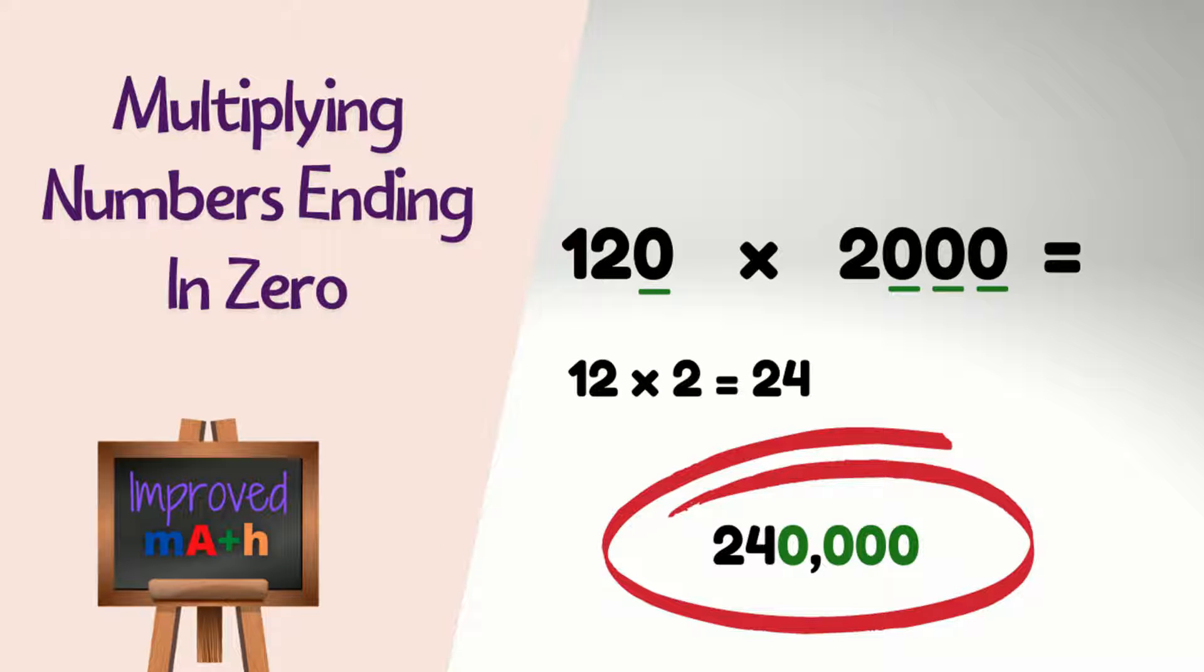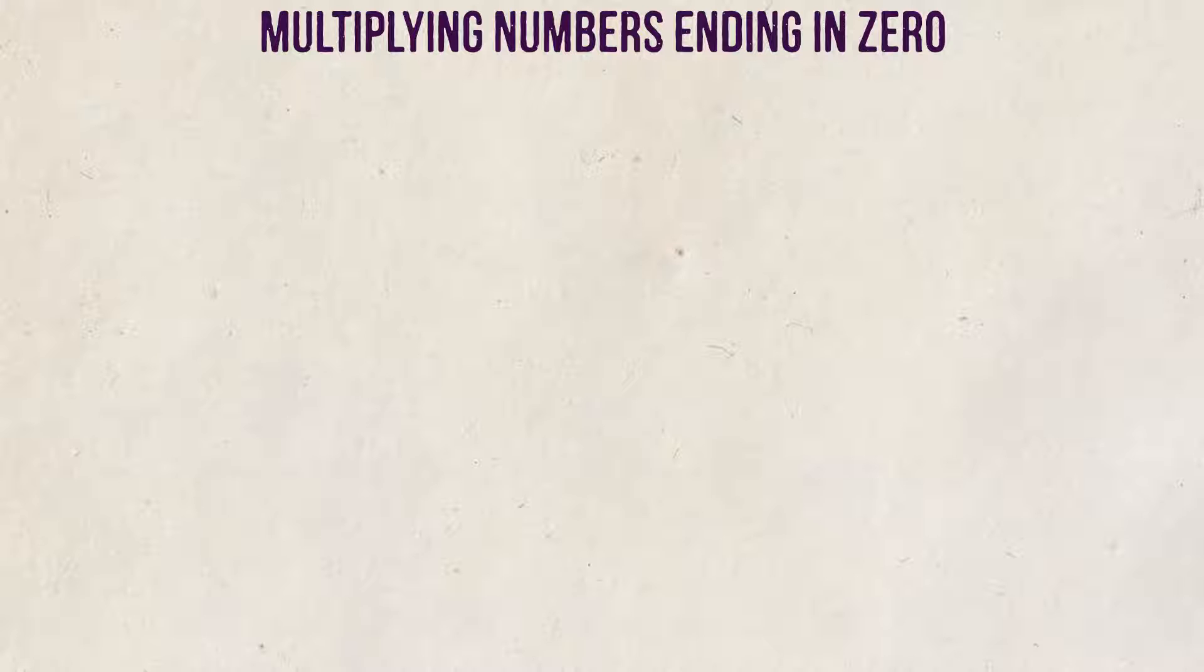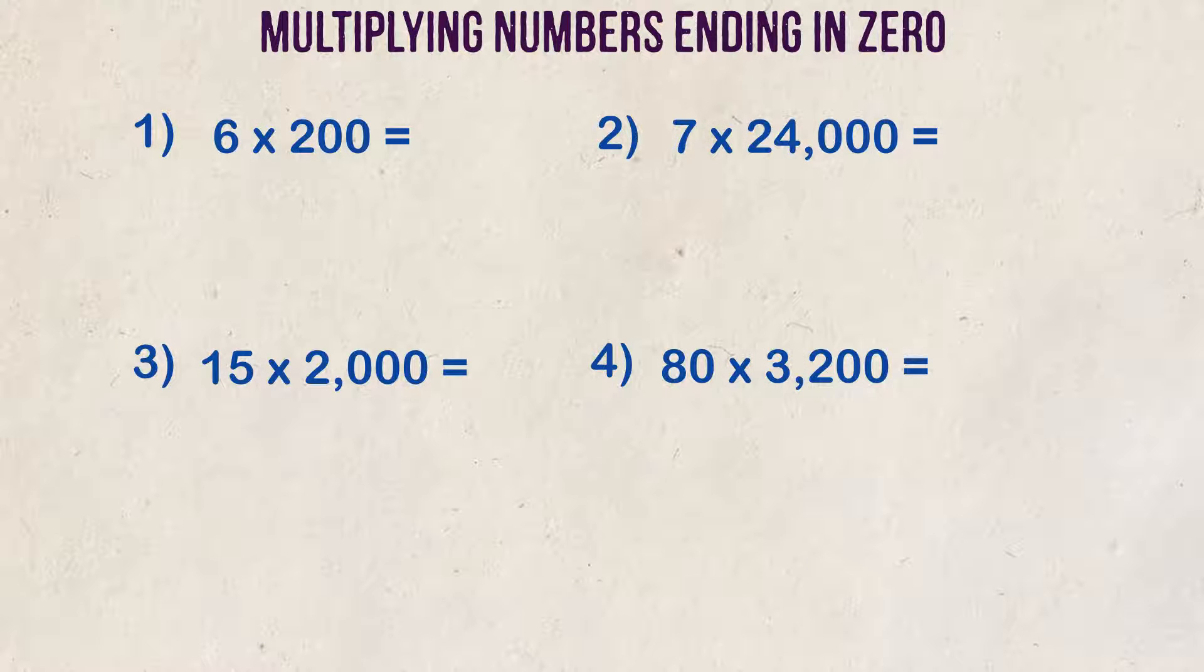Multiplying numbers that end in zero can be easy once you know how. Let's look at a couple of examples and walk through the process step by step. We're going to focus on the non-zero numbers first, multiply them together, then we'll add the additional zeros at the end.